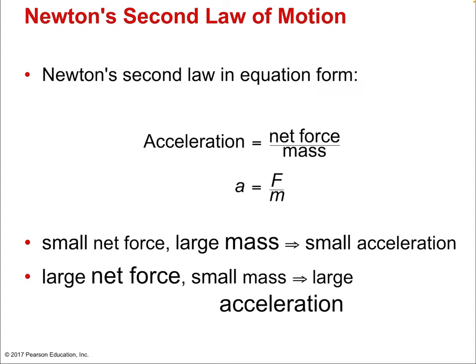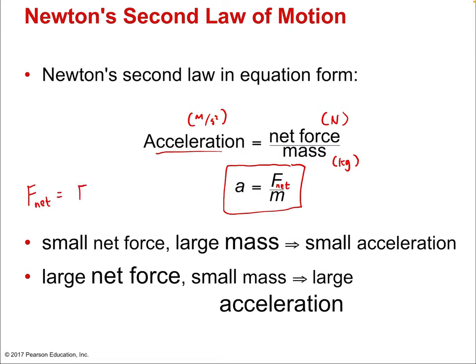In equation form: acceleration in meters per second squared equals net force over mass. Net force is measured in newtons; mass is measured in kilograms. In symbolic form, it's A equals F over M. An important thing is that this is F-net — the subscript net matters. The net force is the sum of all forces: F-net equals F1 plus F2, et cetera. If you ever want to relate acceleration to forces, it has to be the net force — if you ignore any one force, you won't get the true acceleration.